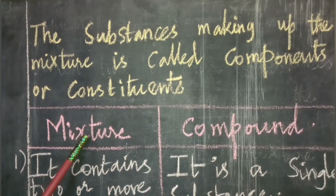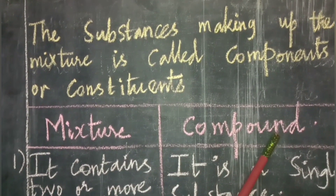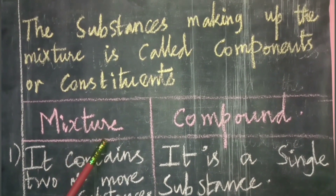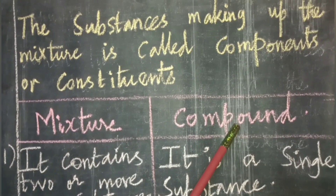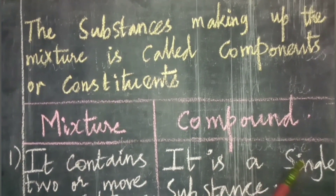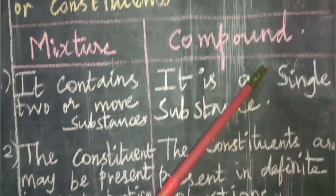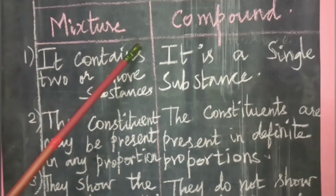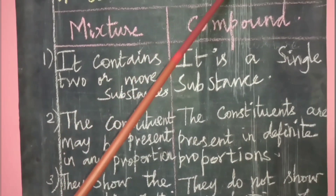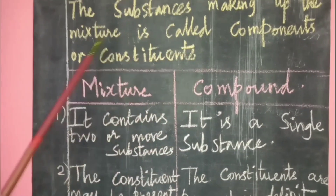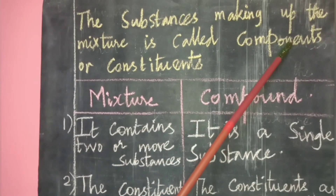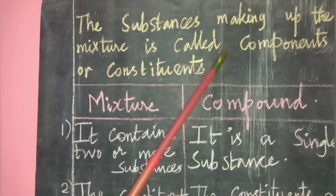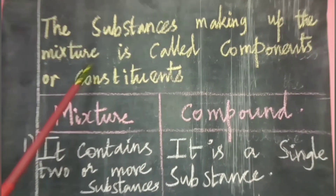Now let's look at the differences between mixture and compound. Examples of compounds are water, sodium chloride, and carbon dioxide. Air is a mixture of nitrogen, oxygen, and carbon dioxide. The substances making up a mixture are called components or constituents.